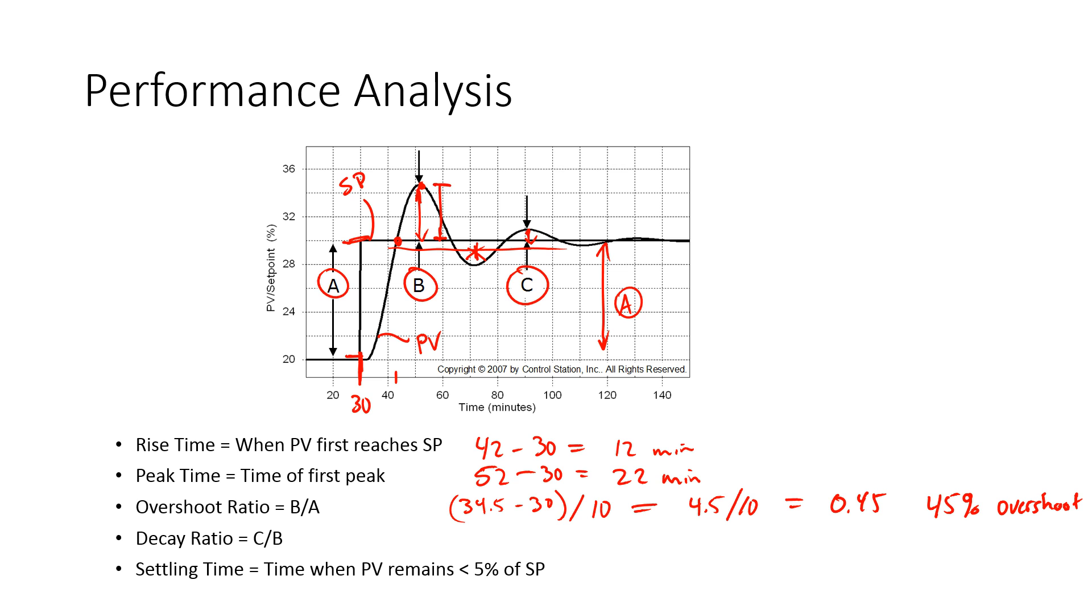45% overshoot or 0.45 overshoot ratio. Decay ratio is successive dampening of the peaks, and so it's going to be this increment C divided by this increment A. That's about probably about 0.2 or so.